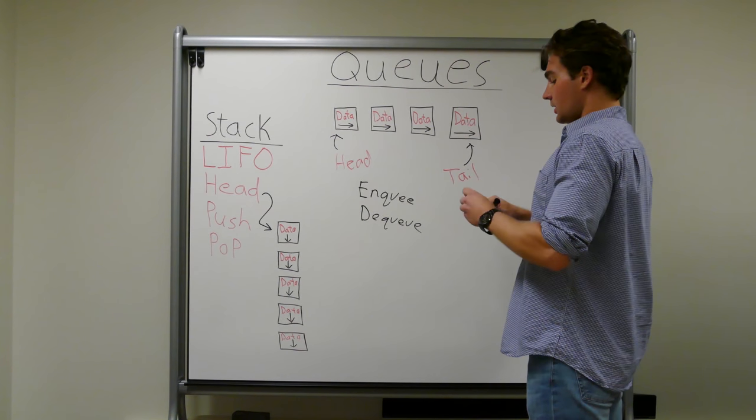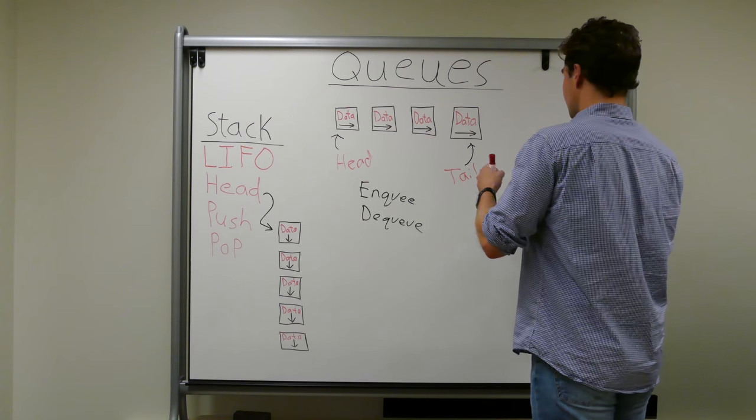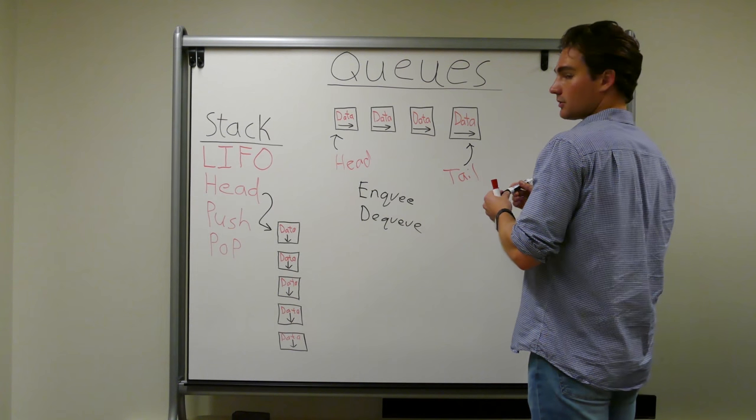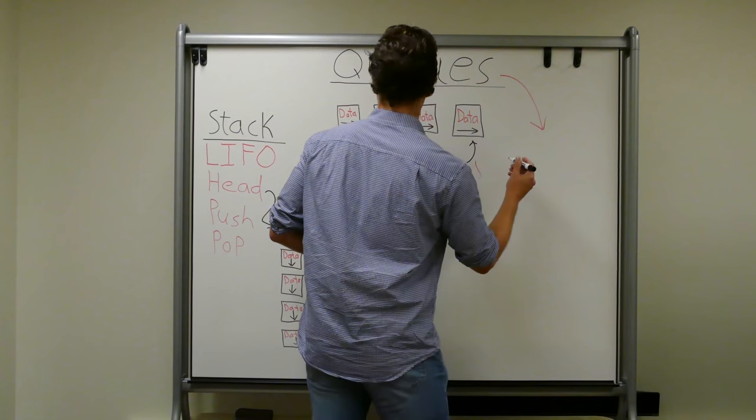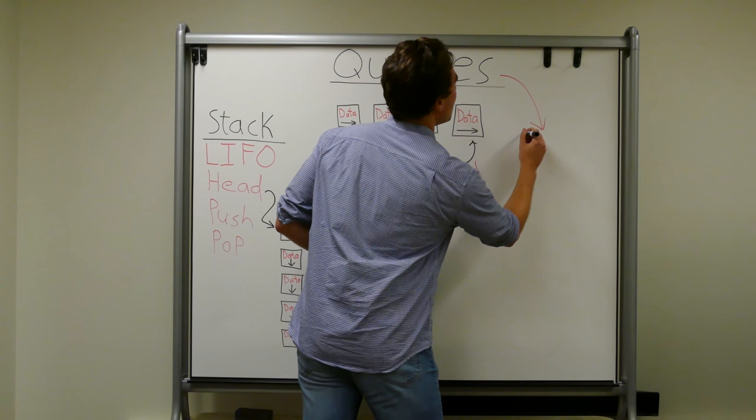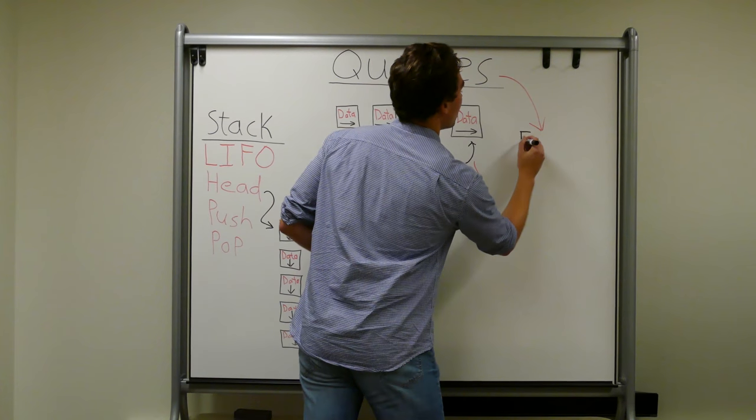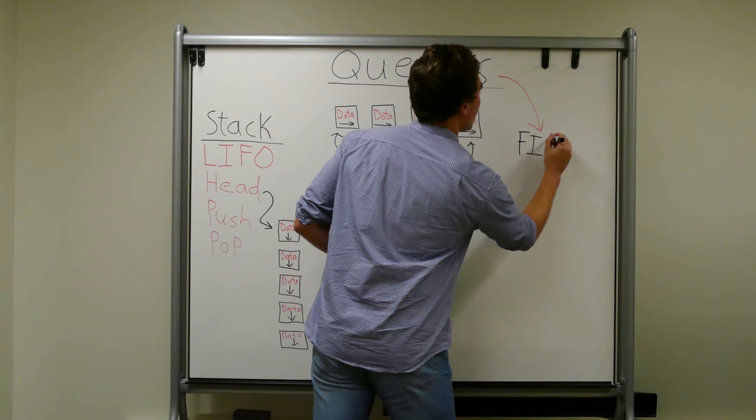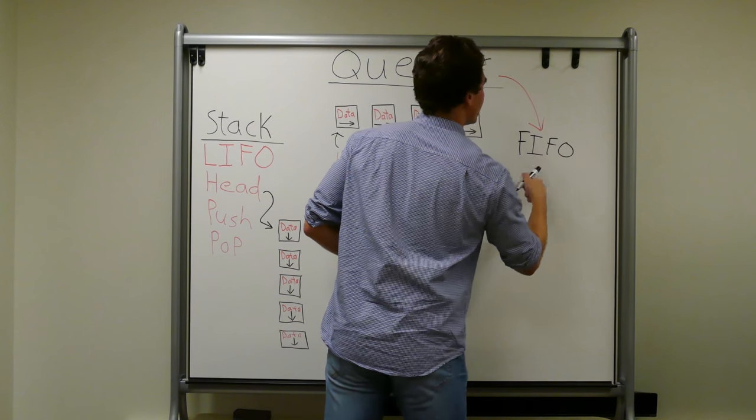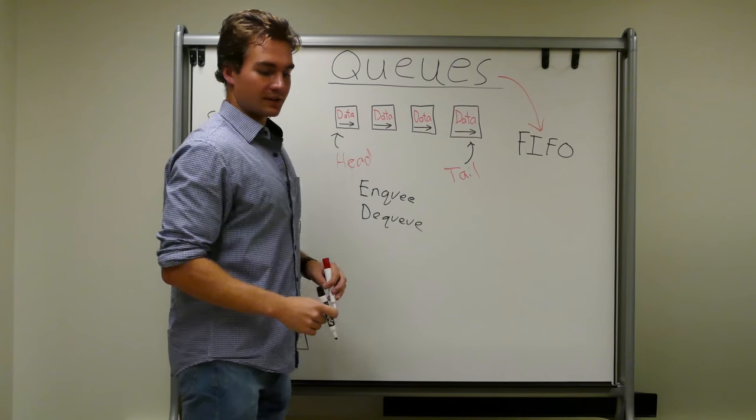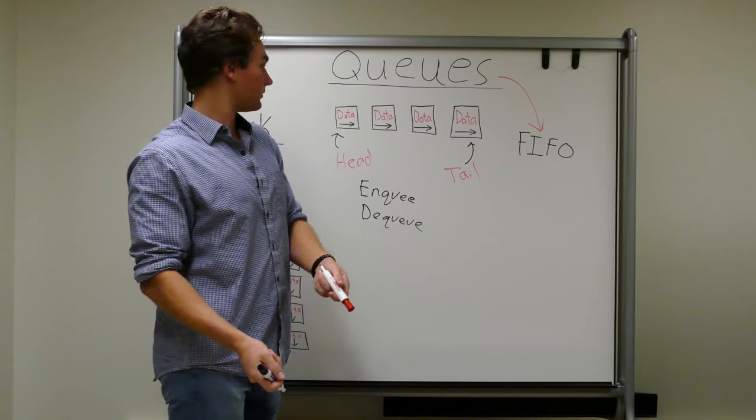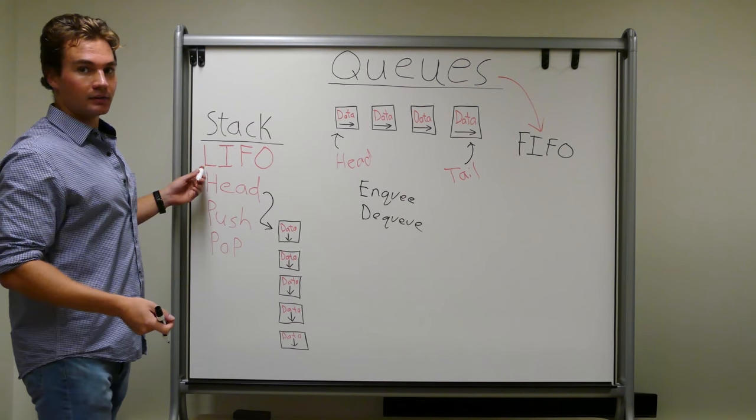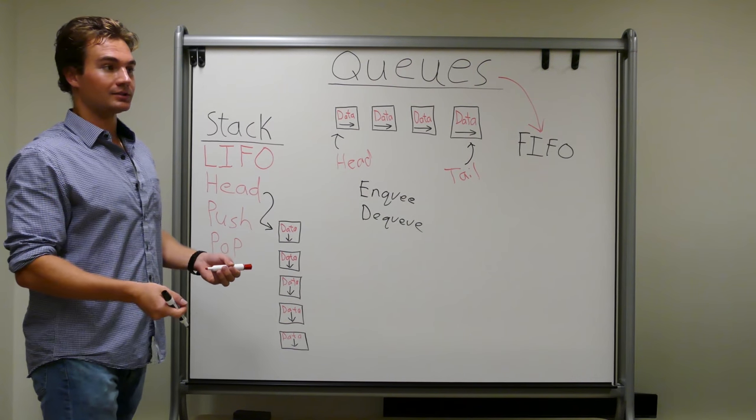So then, as far as the main thing to remember, in terms of an acronym for this data structure, is that a queue is a FIFO, which means first in, first out. You can see that when whoever comes first gets served first. Stack is LIFO, which means whoever comes last is served first.